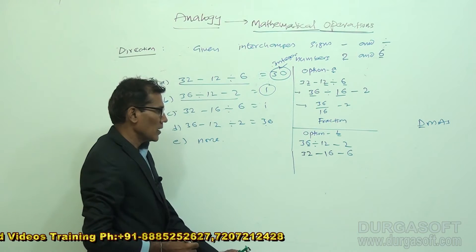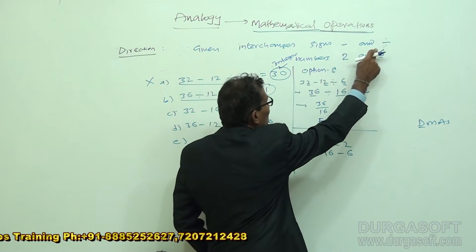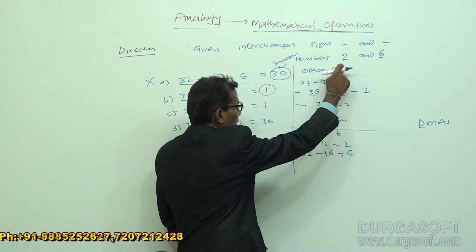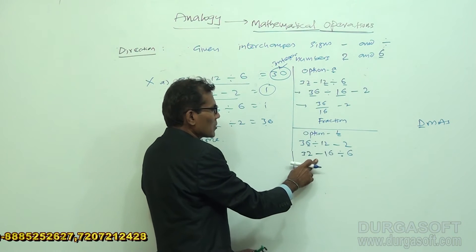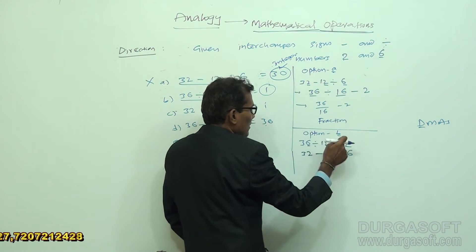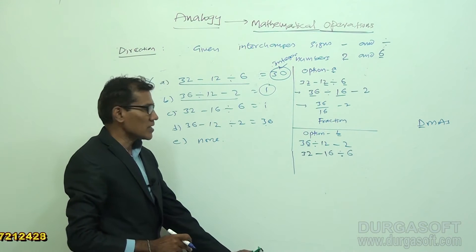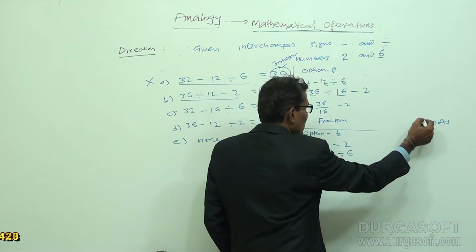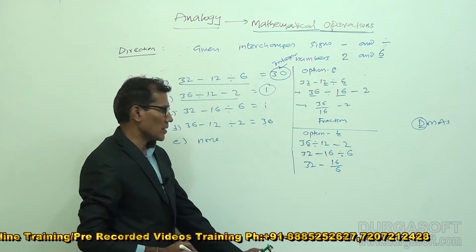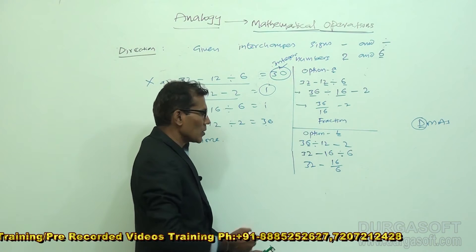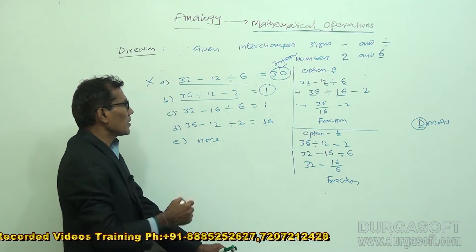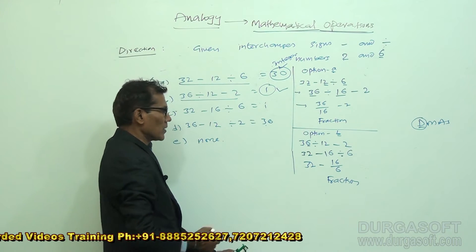After the necessary changes are made, we get: 32 minus 16 divided by 6. According to DMAS, division is operated first. Here, 16 is not exactly divisible by 6, so we get a fraction again. But our required result is 1, which is an integer. Therefore, option B is also wrong.